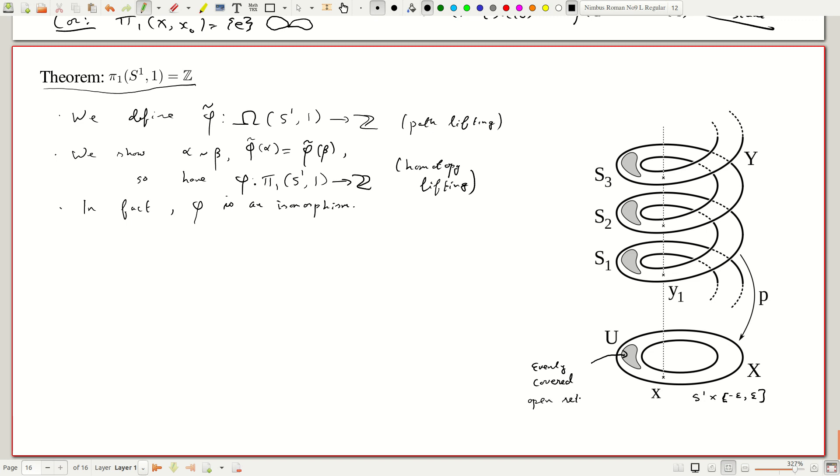So, this is what is called an evenly covered open set. What do we mean by this? If I look at the inverse. So, first of all, we have a map. Well, what is this creature? This is a spiral. So, this is really just the real numbers, of course, thickened a bit.